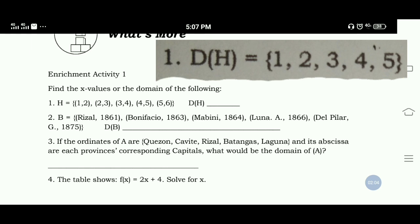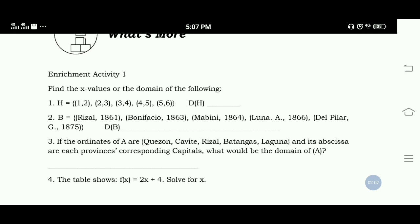Number 2: B is equal to (Rizal, 1861), (Bonifacio, 1863), (Mabini, 1864), (Luna A, 1866), (Del Pilar G, 1875).